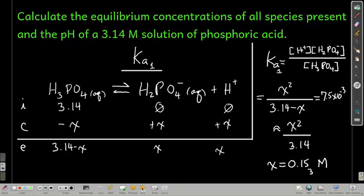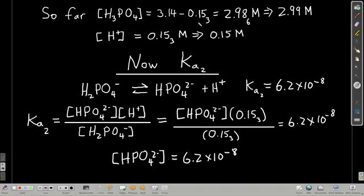Here's what we know now already. We know some stuff. We know that the concentration of phosphoric acid is the initial minus x, so it's about 2.99 molar. And that's what the concentration is going to be for phosphoric acid. We also know the hydrogen ion concentration already.